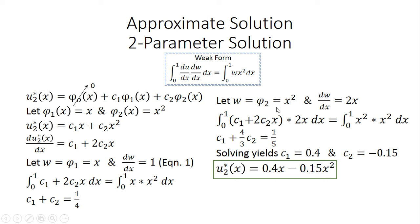For the second equation, we let w equal phi_2 equal x squared, so dw/dx equals 2x. We plug du/dx equals c1 plus 2c2 x, multiply by 2x, and set w equal to x squared times x squared. Solving the weak form integral gives the second equation: c1 plus 4/3 c2 equals 1/5. With two equations and two unknowns, solving the system gives c1 equals 0.4 and c2 equals negative 0.15.